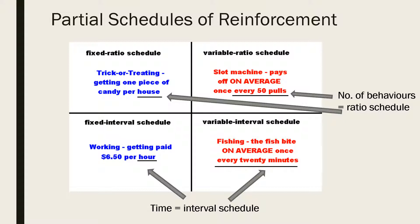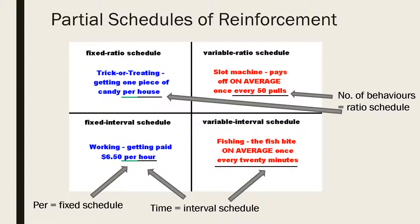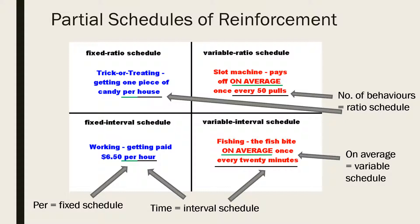The subject is being paid per hour and the fish is biting on average every 20 minutes. The two blue examples are fixed schedules as the reinforcement is being administered by the same amount of time or behaviours each time. The two red examples are variable schedules as the amount of time or behaviours being reinforced varies each time, hence the average is given.